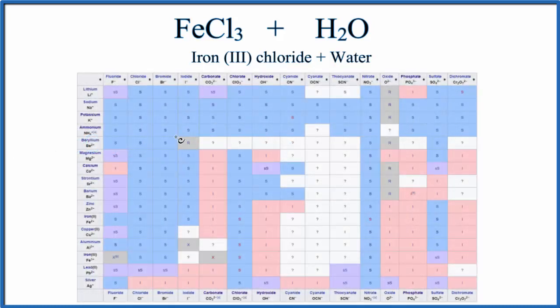So here's the solubility table. We're going to look at iron 3, so we go down, and here's iron 2. We want iron 3, Fe3 plus. Then we'll go across, we're going to find the chloride. There's chloride, Cl minus, we go down, and there it is, an S.